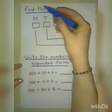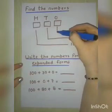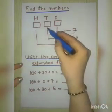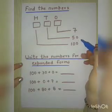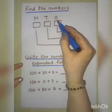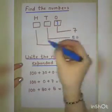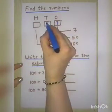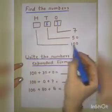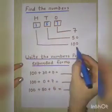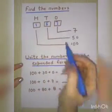So our next exercise is find the numbers — we have to fill the boxes. At 1's place 7 is written, at 10's place 50 is written and at 100's place 100 is written. At 1's place we write 7, at 10's place 50 means 5 tens so we write 5, and at 100's place 100 means 1 hundred so we write 1. The number is 157.